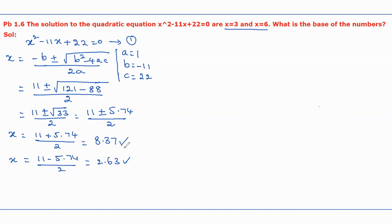Now let us check these two solution values against the given solution values x equal to 3 and x equal to 6. These two sets of values are not equal, which means the given quadratic equation is not in the decimal number system.